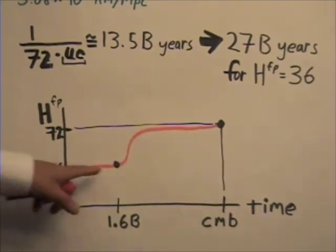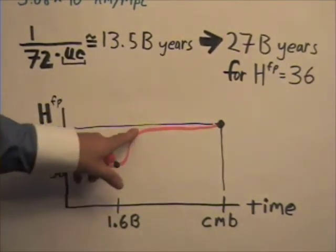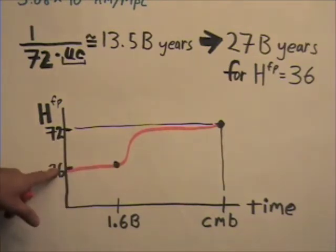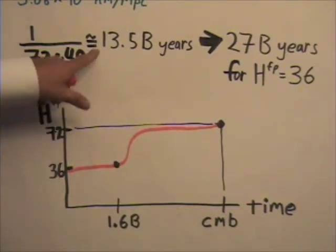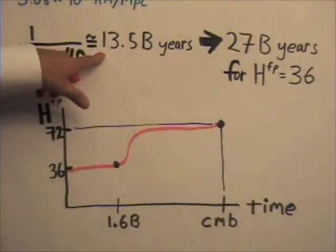If the shape of the curve looked like this, and the drop was relatively recently, which is admittedly very unlikely, then the age of the universe would be much closer to the 13.5 billion year end of the spectrum.